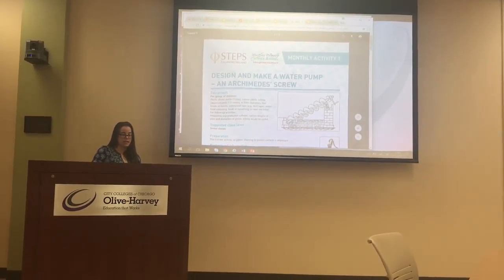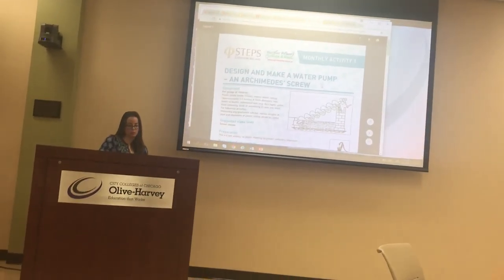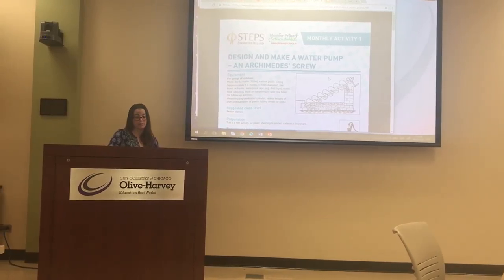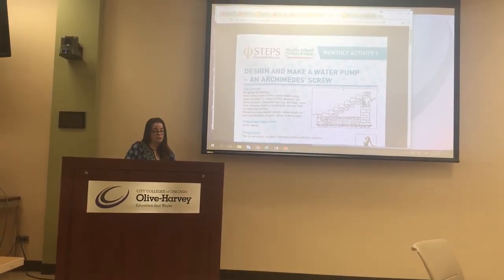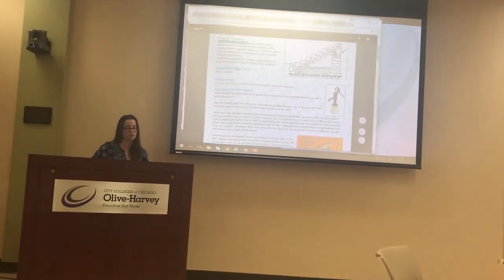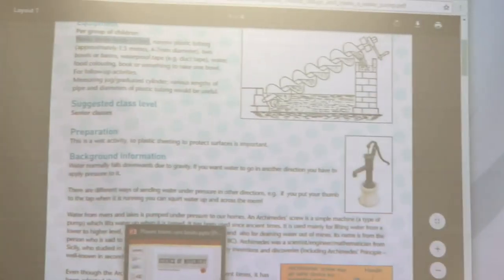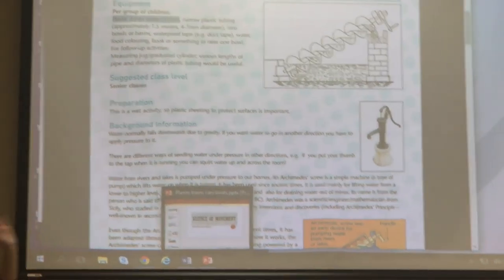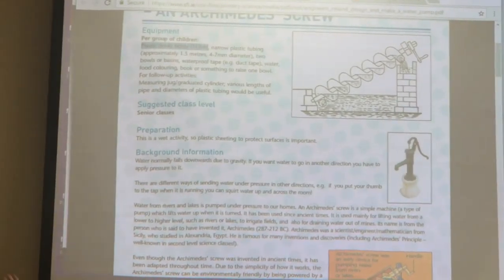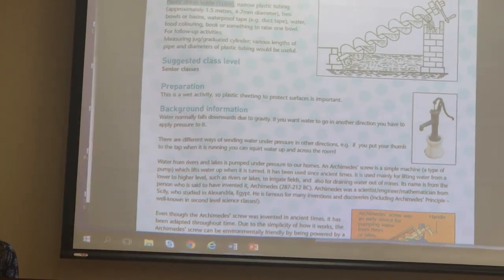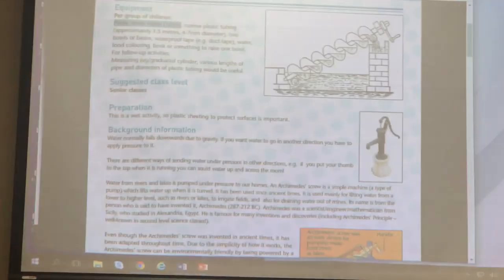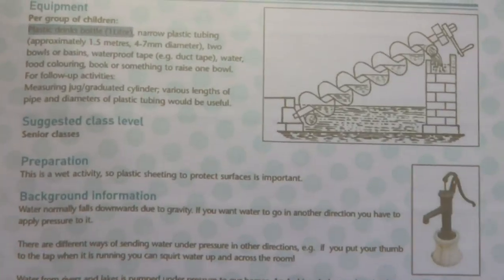The lab activity is designing and making an Archimedes screw — basically a very simplistic type of water pump, yet still used around the world. The equipment list includes a cylinder that is currently on back order so this will be pushed back a bit. We'll need plastic tubing, two bowls or basins that can hold water, waterproof tape, water to put in it, and food coloring so we can visually see the water through the plastic tubing.